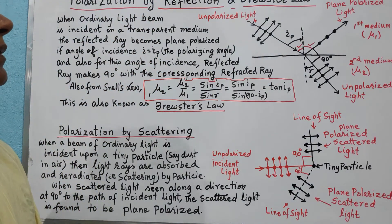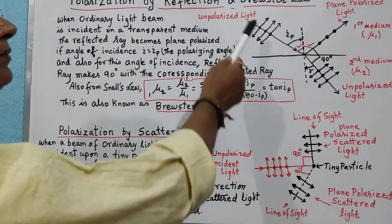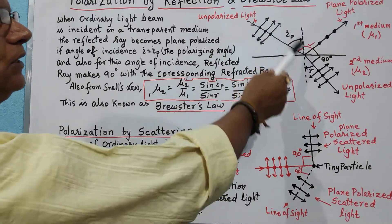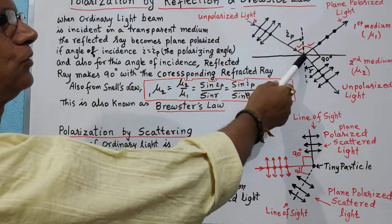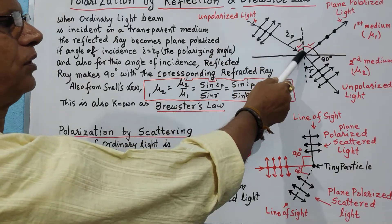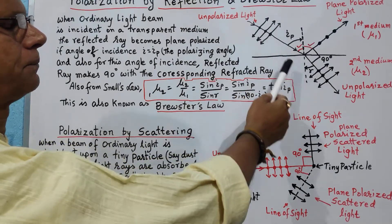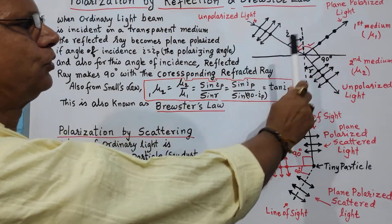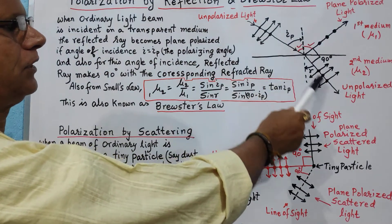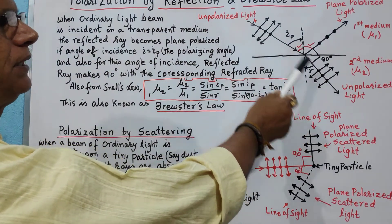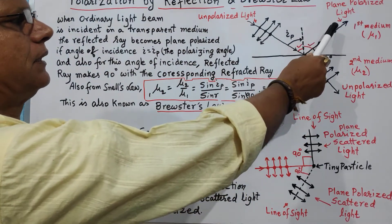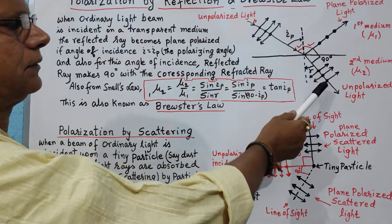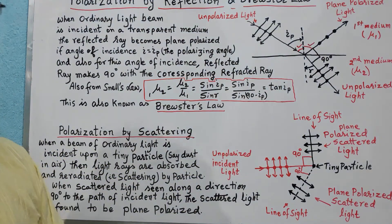Here we are considering an ordinary light ray which is allowed to fall on a medium having a refractive index mu2, which is a transparent medium. A part of the light will be reflected and the remaining part will be transmitted.